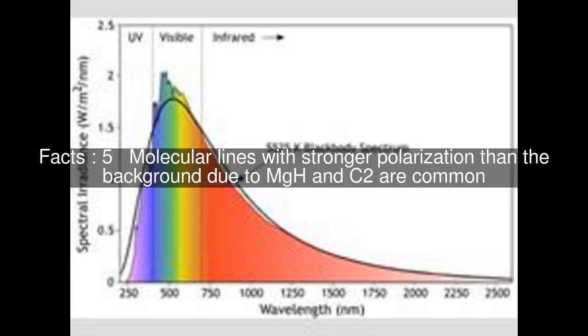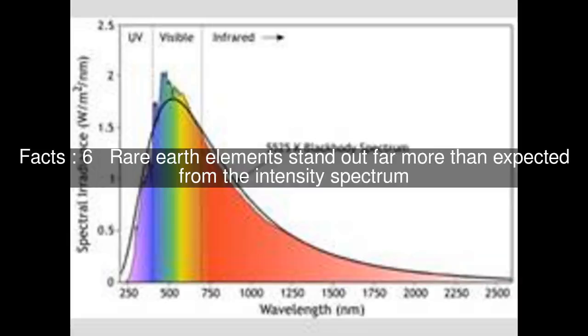Molecular lines with stronger polarization than the background due to MgH and C2 are common. Rare Earth elements stand out far more than expected from the intensity spectrum.